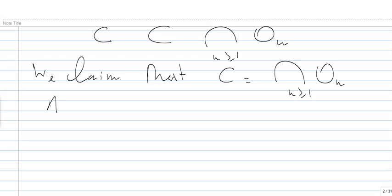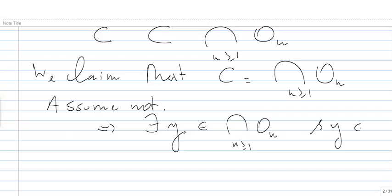Assume not. Then there exists Y which belongs to the intersection of all the O_Ns, and Y does not belong to C, which means that Y belongs to the complement of C, which is open.